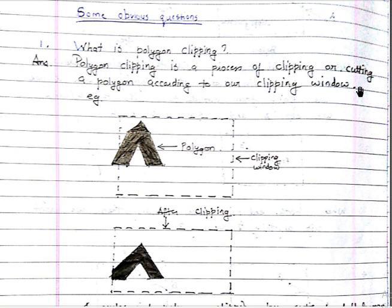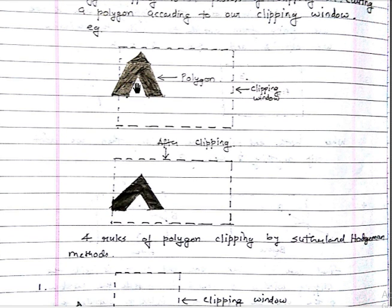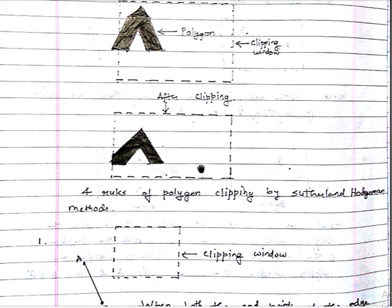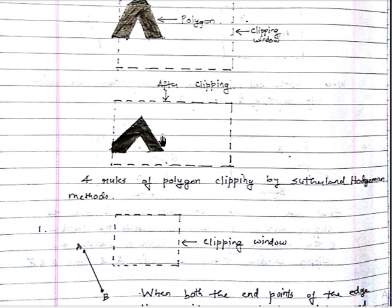Polygon clipping is the process of clipping or cutting a polygon according to our clipping window. For example, suppose this is our polygon and this is our clipping window. So if we clip the polygon, this part will be clipped and won't be visible anymore — anything inside the clipping window will be kept, and the rest will be removed.